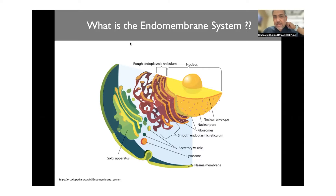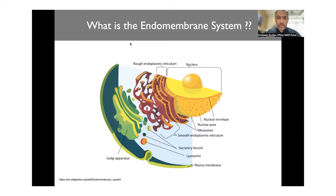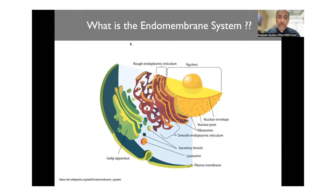The endomembrane system is a system that connects the protein synthesis machinery at one end to the processing and delivery of proteins to different parts of the cell, including the plasma membrane. This network is made up of lipid membranes, and that allows for proteins to travel in a milieu of lipids, to be modified and functionalized there, because eventually they have to function in a milieu of lipids.